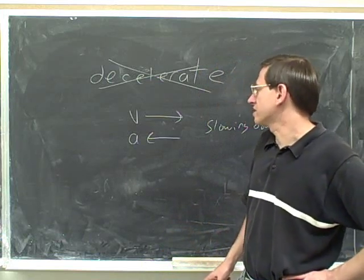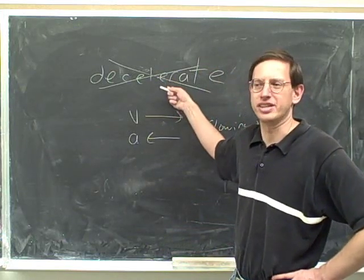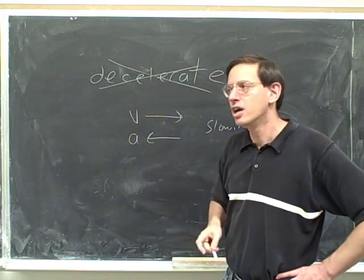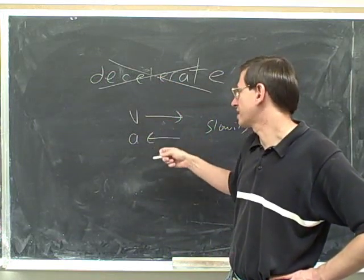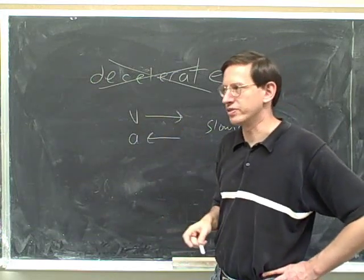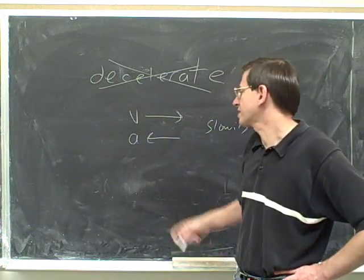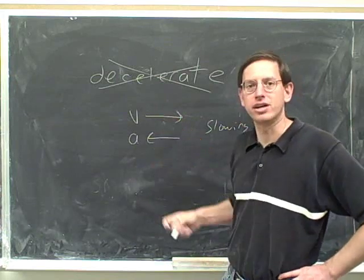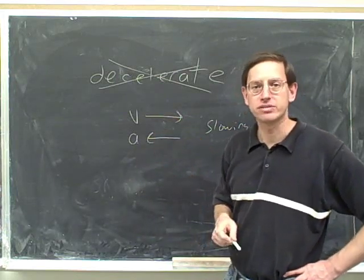It's just going to confuse us to try to say that this has a deceleration. That's not a useful term in physics. So do not describe this situation by saying that this object has a deceleration or is decelerating. Instead, you should say this object has an acceleration that is anti-parallel to the velocity. Or you could just say it's slowing down.